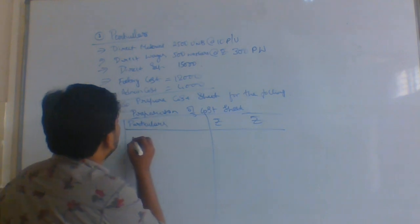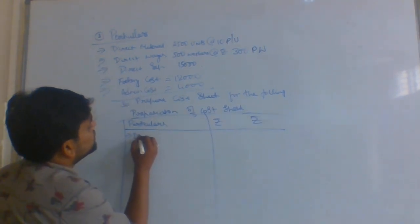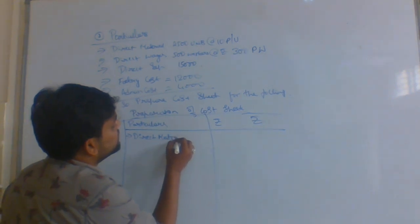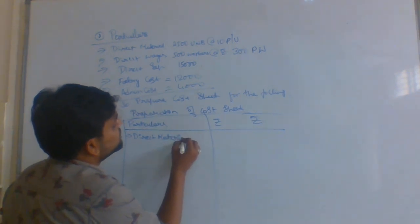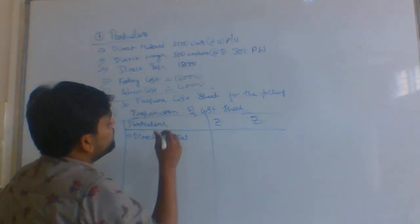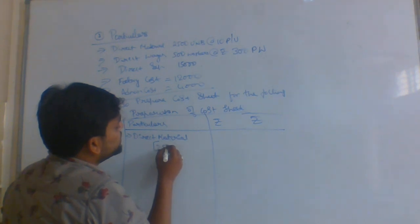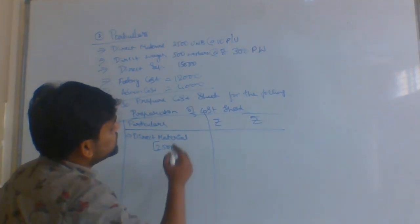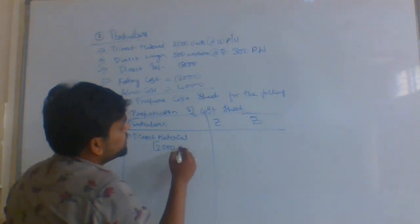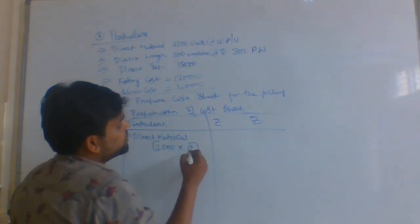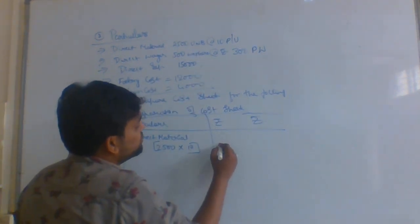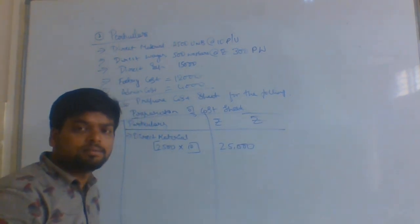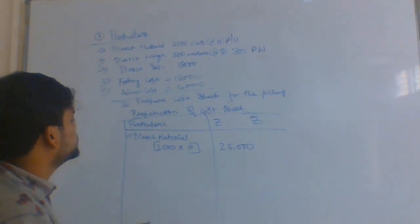The first one is direct material. How many units? There are 2500 units at rupees 10 per unit. So you will get an amount of rupees 25,000. That is the first part.